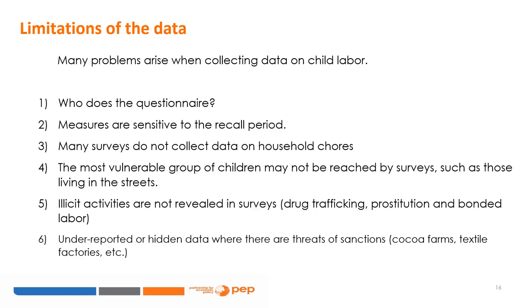Many problems arise when collecting data on child labour. First, parents may hide the fact that their children work and may not answer survey questions appropriately. Second, measures are sensitive to the recall period — surveys usually ask about work performed the week before the interview, but children commonly work intermittently, for example during harvest seasons. Third, many surveys do not collect data on household chores, yet a large percentage of mainly girls work long hours in their households. Fourth, the most vulnerable children may not be reached by surveys, such as those living in the streets. Fifth, illicit activities — drug trafficking, prostitution, bonded labour — are not revealed in surveys. Finally, in places where there are threats of sanctions, the number of children working is underreported, as in cocoa farms and textile factories.